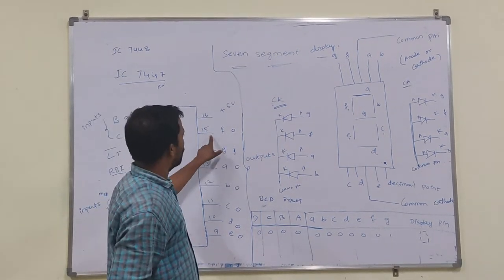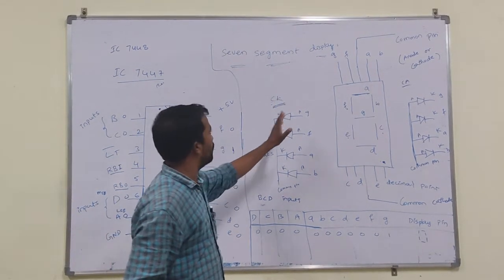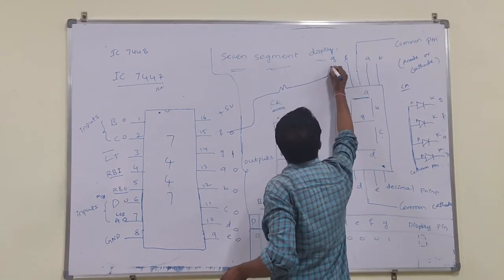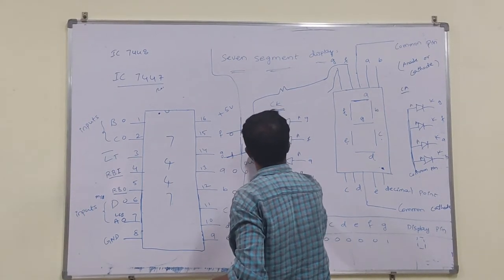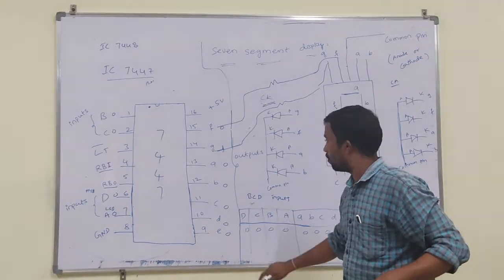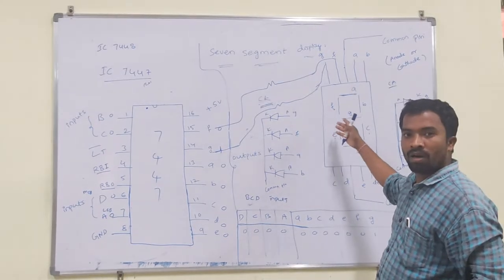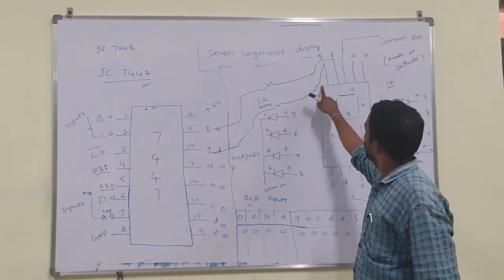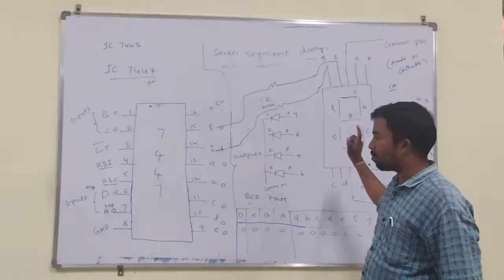You have to connect a resistor from F to F, G to G, and so on up to E. To protect the LEDs, connect a 1 kilo ohm resistor in series between the IC and the seven segment display.